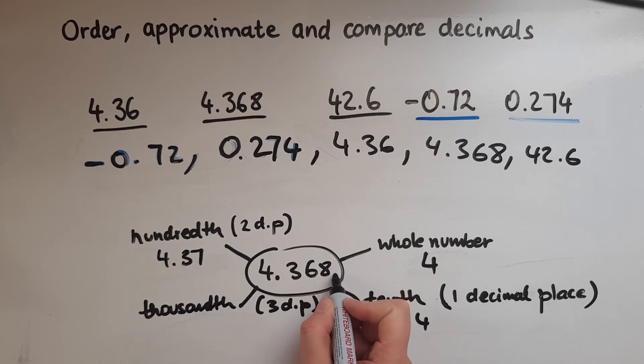We haven't got a digit here to impact it, but we know that when there isn't a digit, it's a zero. So that means we're going to round down. So this is going to stay as 4.368 as it is.